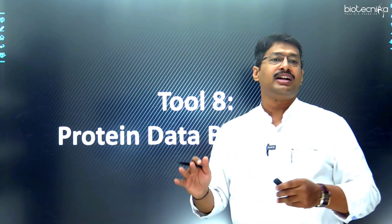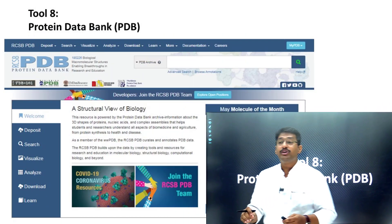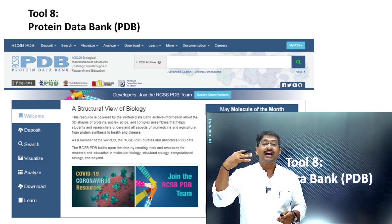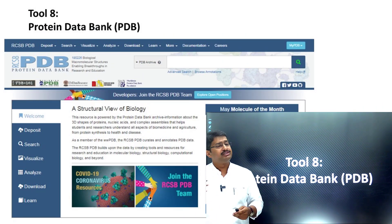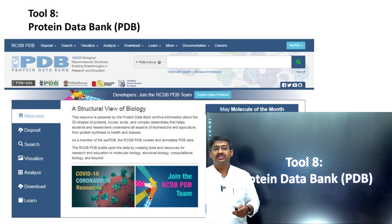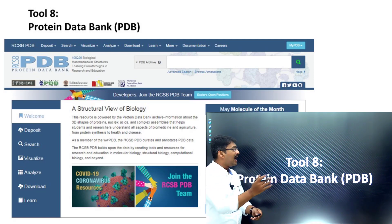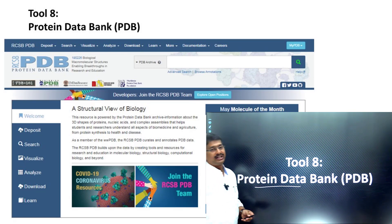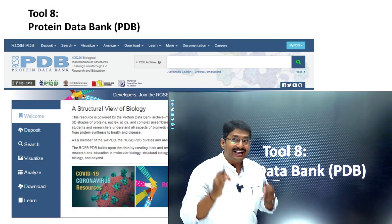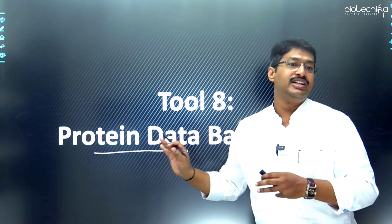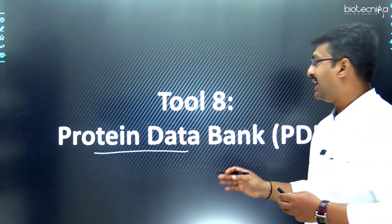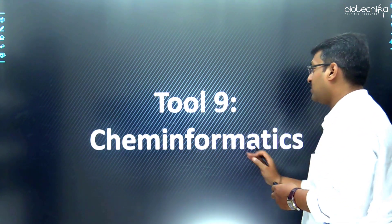The next database is the Protein Data Bank, called PDB. PDB is a huge repository of proteins analyzed using NMR studies, spectral studies, and X-ray diffraction studies. These well-characterized proteins are deposited in the Protein Data Bank, and for selecting any target, PDB is the best online tool for analysis based on protein structure.